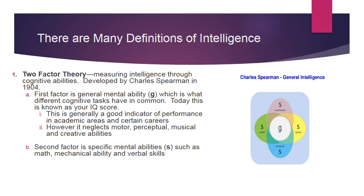What you'll see here is G in the center, and then the S's around it — verbal, mechanical, spatial, numerical. So an artist, for example, may have very good spatial skills and mechanical skills, but may not have a good mathematical sense. What we're looking at here is not just one type of intelligence.